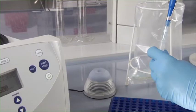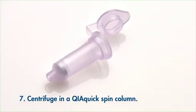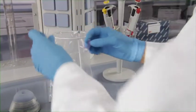Then I pipette this mixture into a QIAquick spin column. I will centrifuge this and discard the flow-through. The DNA stays on the column.